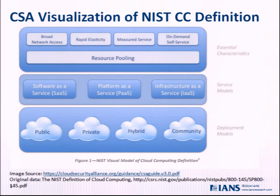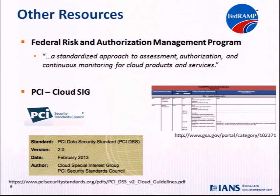I'm going to be focusing on the CSA, so why bring up other references? Because I think they're important. NIST is one reference. One that's not shown here because you have to be a member of ISACA — ISACA has recently published cloud controls mapped to and supported by COBIT 5. So if you are a COBIT shop, that's a really good resource.